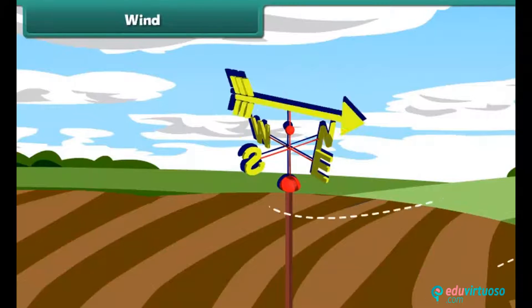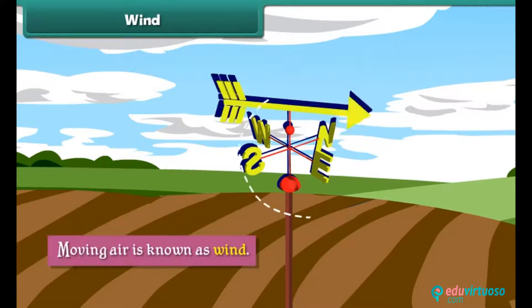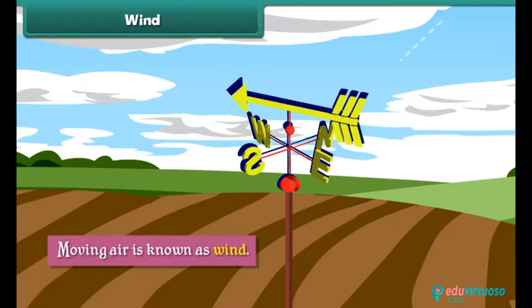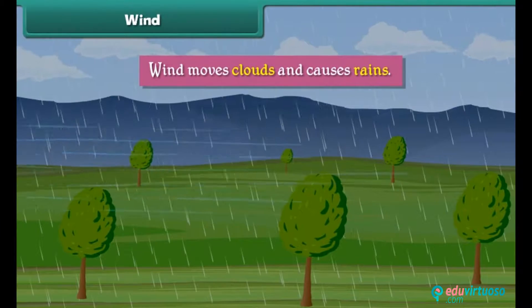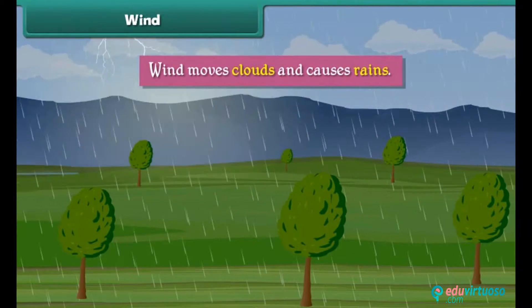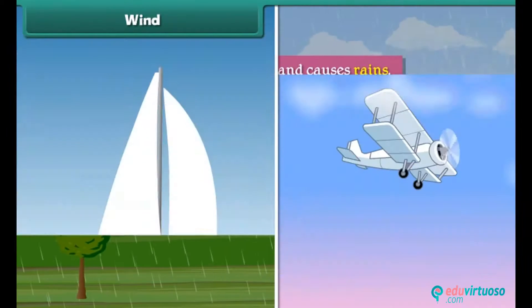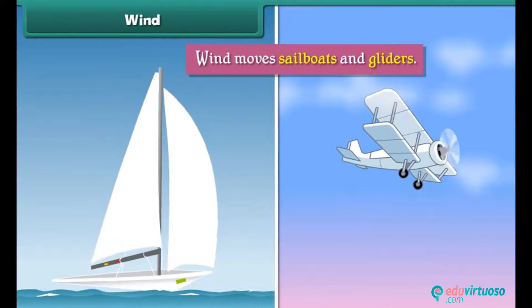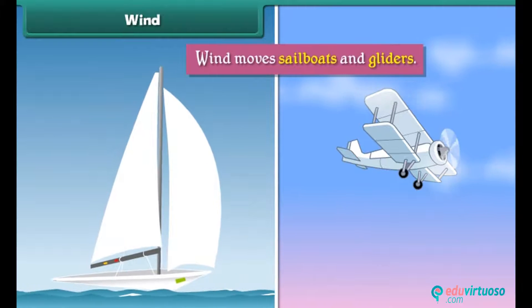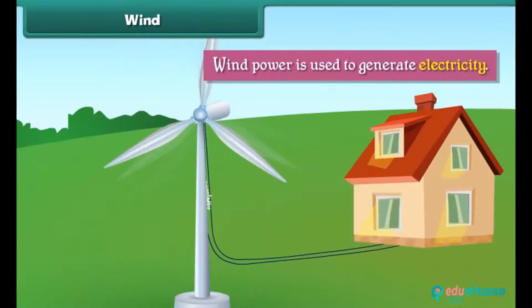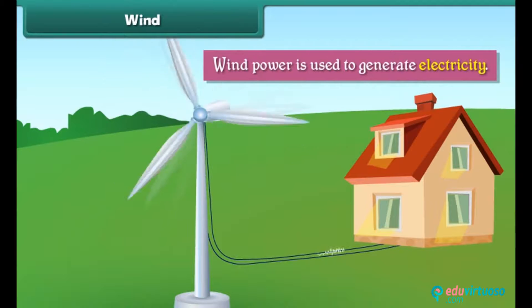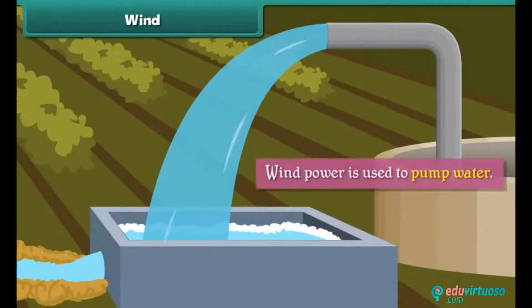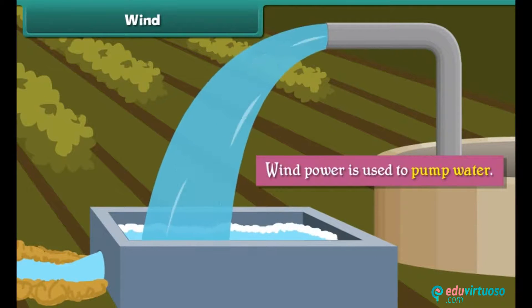Moving air is known as wind. Wind moves clouds and causes rain. Wind moves sailboats and gliders. Wind power is also used to generate electricity and to pump water.